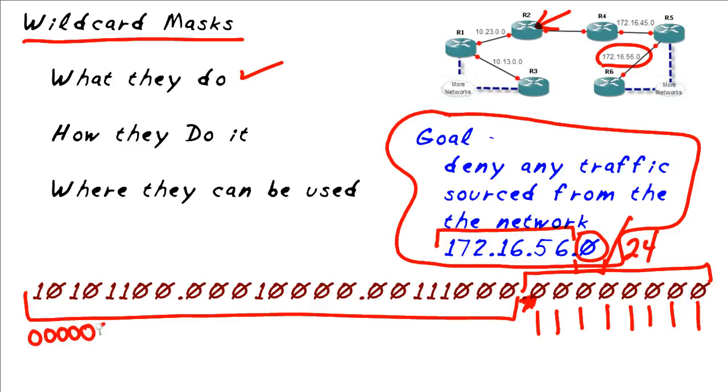and that indicates that these first 24 bits, they do have to match inside the ACL, and the last eight bits, because the wildcard mask bits are on, we don't care, and they don't have to match.